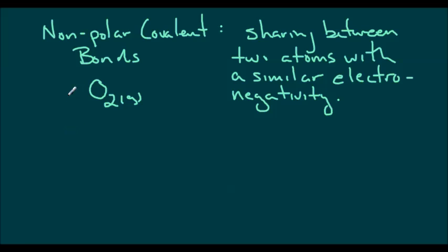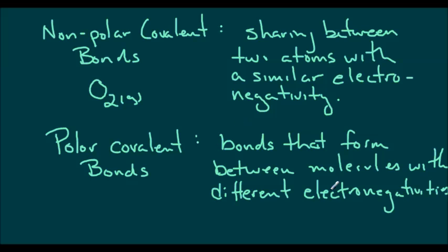Of course the opposite to non-polar covalent bonds would be polar covalent bonds. Polar covalent bonds occur when you have more than one atom bonding in a molecule that have different electronegativities. A perfect example of this would be in water. So in H2O we have hydrogen, which does not have a very strong electronegativity, and oxygen, which does have a very strong electronegativity.